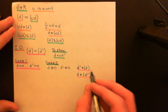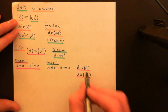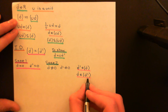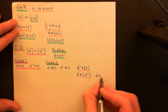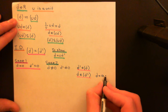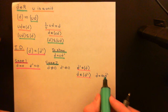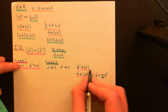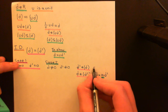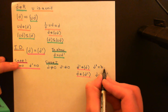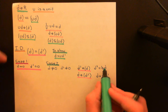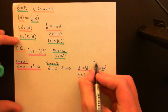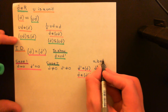Taking the statement that D is in the principal ideal generated by D': this means D equals some element A in the ring times D'. My goal is to show that A is going to be a unit. So D equals A times D'. Additionally, using the other statement that D' is in the principal ideal generated by D, we get D' equals B times D, where B is also an element of the ring. So D is a multiple of D' and D' is a multiple of D, where A and B are elements of the integral domain.